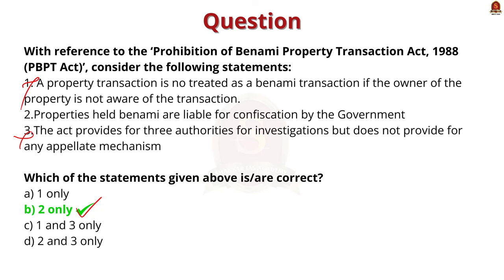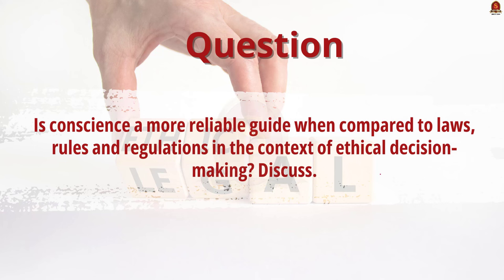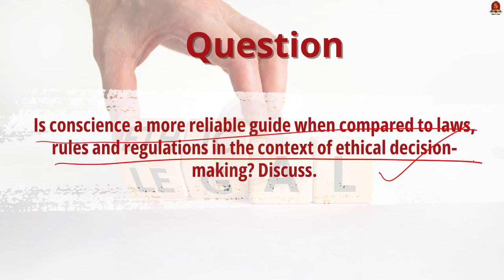We have an ethics question for today's discussion: 'Is conscience a more reliable guide compared to laws, rules, and regulations in the context of ethical decision making? Discuss.' This question needs conceptual clarity in the ethics syllabus and must be applied holistically. Each argument should have an example to substantiate it. In the introduction, define conscience and its importance in decision making, then differentiate it with laws and regulations.